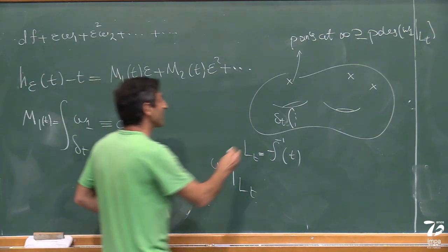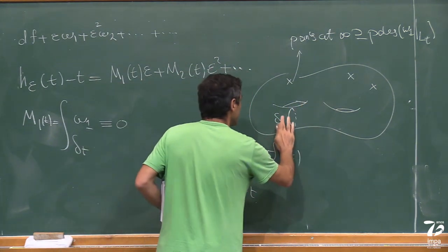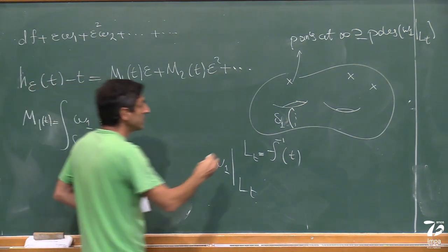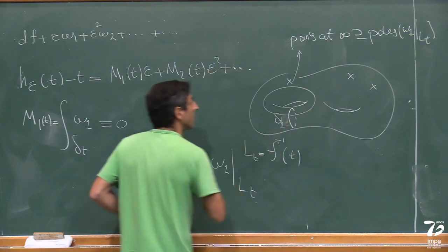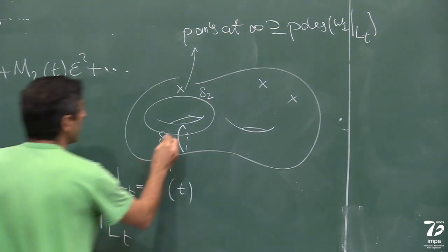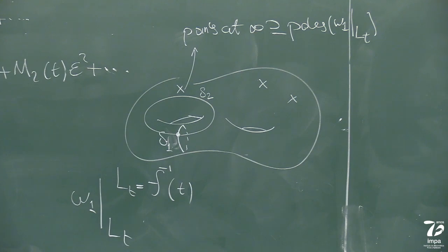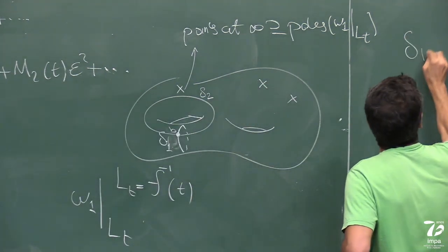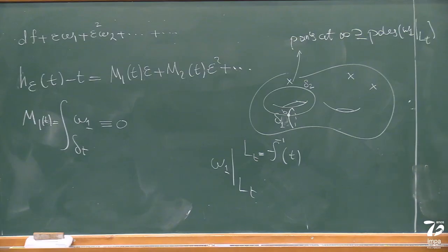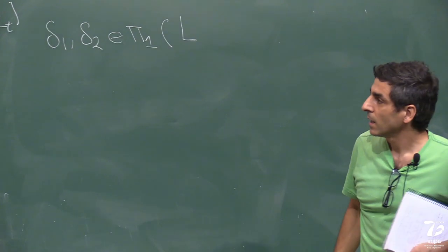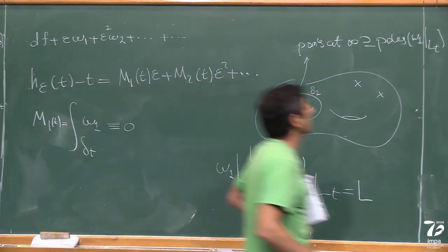We forget the real context; now we are doing pure holomorphic foliations with no interest in the real world. For example, take delta_1. For the moment I will fix t, but my Riemann surface depends on t. Just take two cycles on your fiber delta_1, delta_2. We don't need them to intersect each other, but anyway. Let's say this is one base point b. So you are taking delta_1, delta_2 in the first homotopy group of L, at the point b.